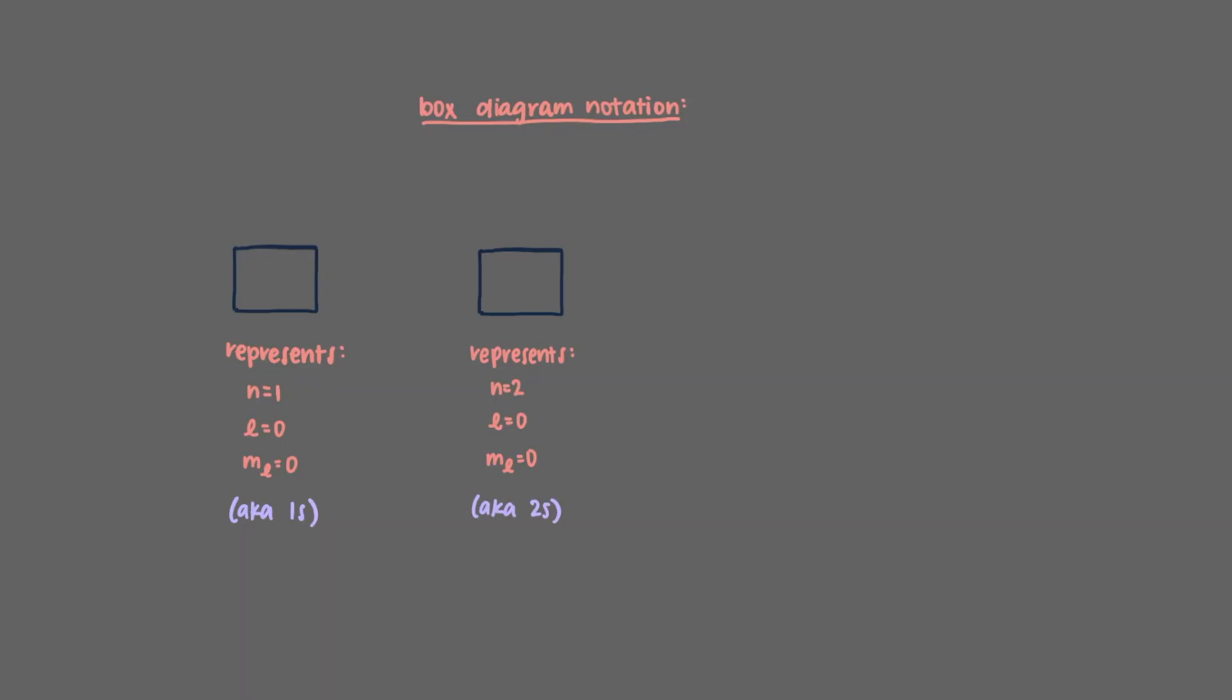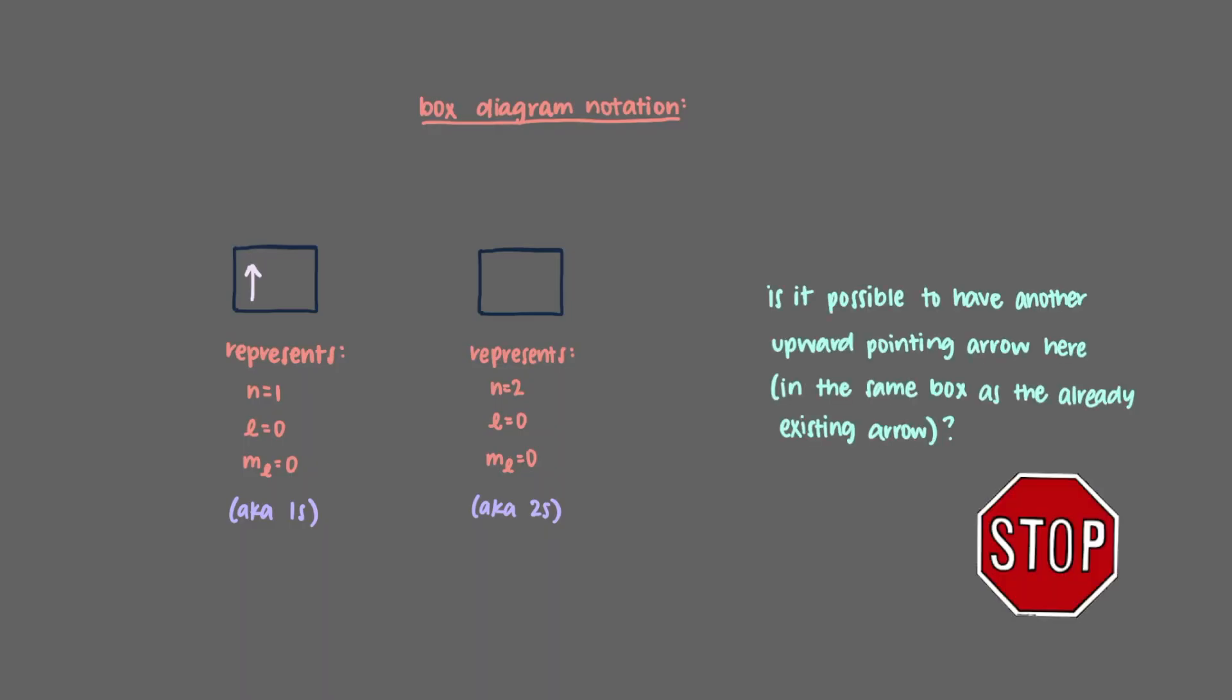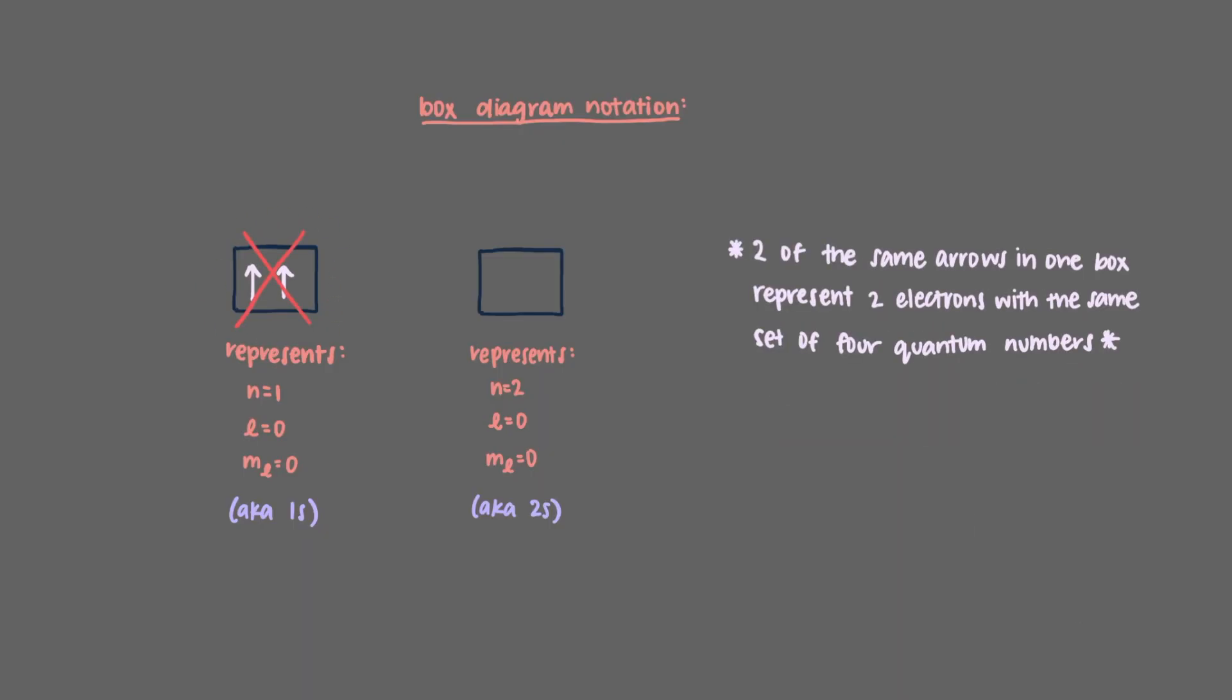We denote that we have a spin up 1s electron by drawing an arrow pointing up. Is it possible to have another upward pointing arrow here? We can't, because this would represent a second electron with the same four quantum numbers, which isn't possible, but a second 1s electron, this time spin down, is exactly what we have in the helium atom.